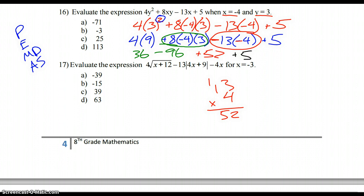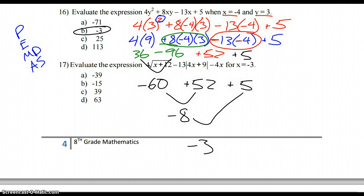So now we have to subtract from left to right, or add and subtract from left to right. So 36 minus 96 gives me negative 60, plus 52, plus 5. So negative 60 plus 52 is going to be negative 8. And then negative 8 plus 5 is going to give me negative 3. There we go. We're going to have B for that one.